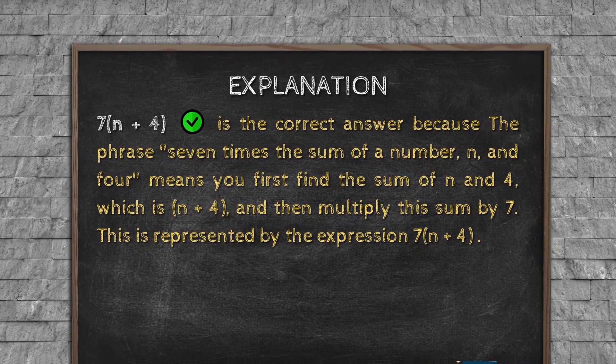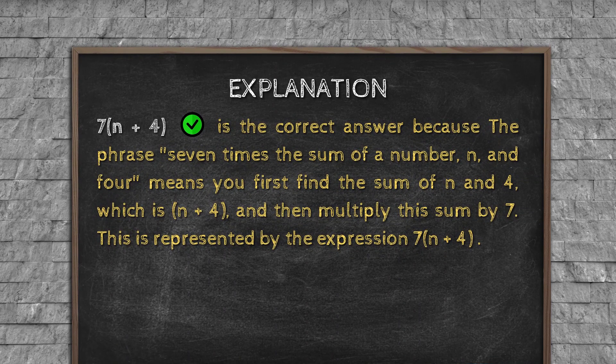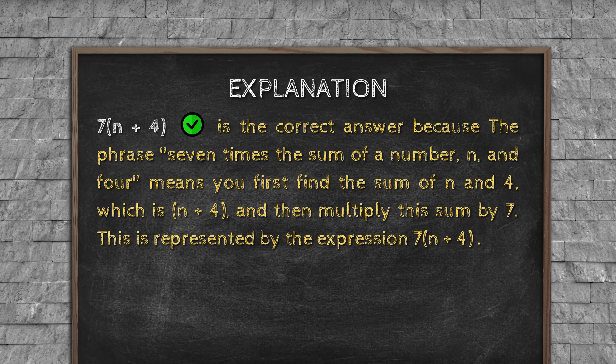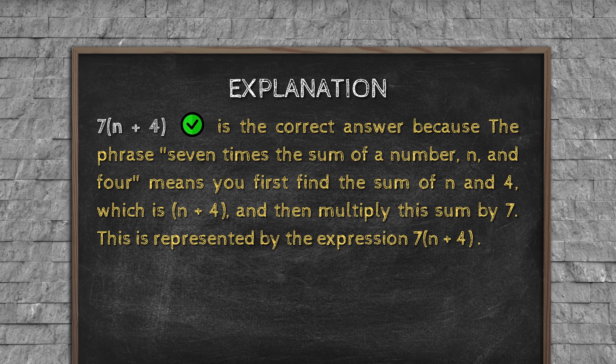Explanation: 7(n + 4) is the correct answer, because the phrase 'seven times the sum of a number n and 4' means you first find the sum of n and 4, which is n + 4, and then multiply this sum by 7. This is represented by the expression 7(n + 4).